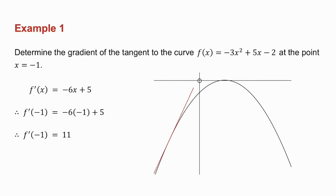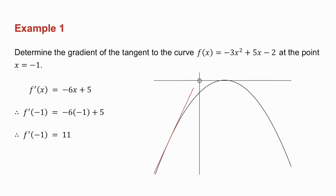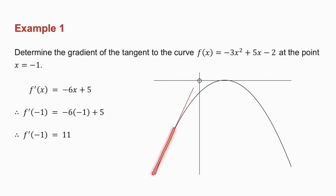The graph is not part of my question at all, but I want to look at it just to give you a better understanding. f of x is a parabola. When I ask you for a tangent to the parabola at the point x equals minus 1, there's my tangent to the parabola, and the gradient of that tangent is 11. So you're taking the derivative, substituting the point in, and you get your answer.